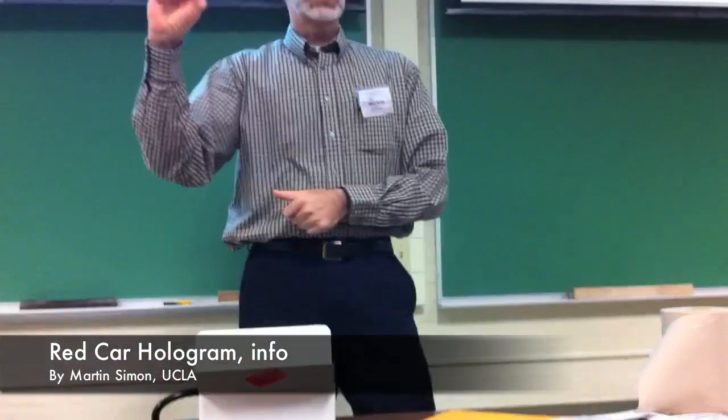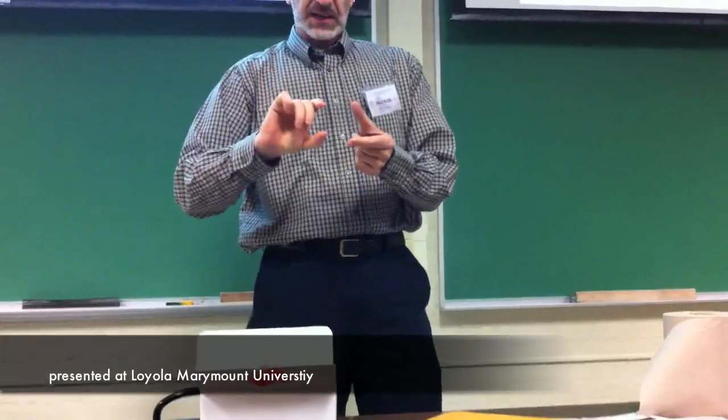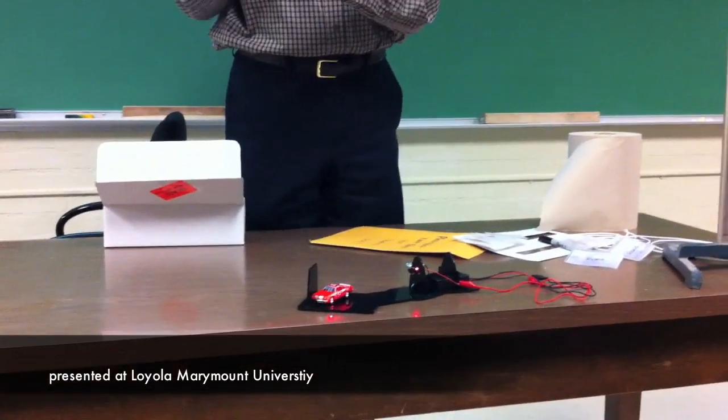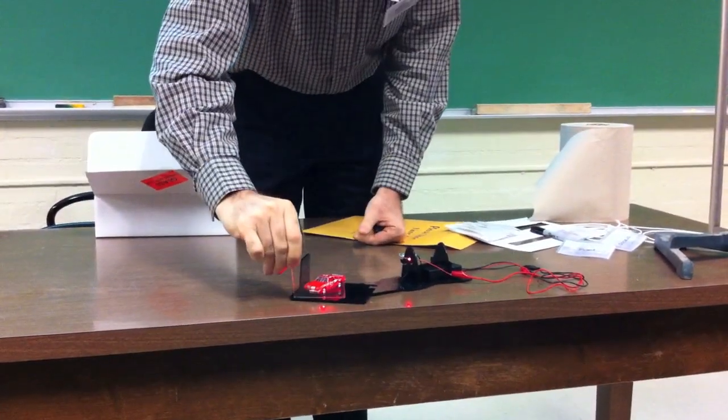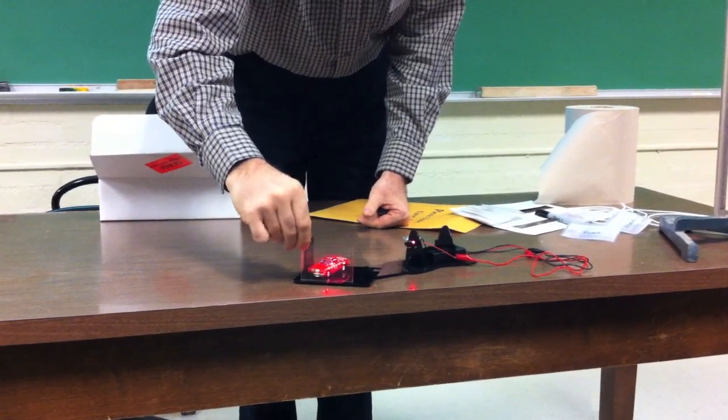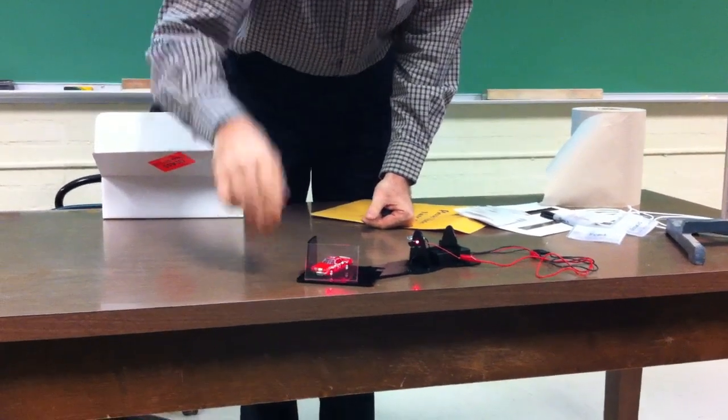Right here, the emulsion is on the film, and you first put a blank piece of glass without film here, and you arrange your little scene, and when you get the scene arranged,